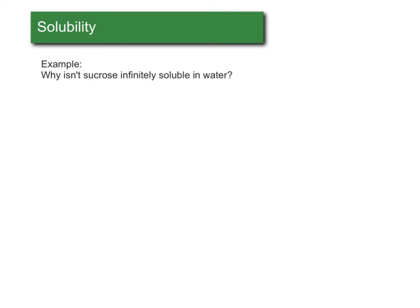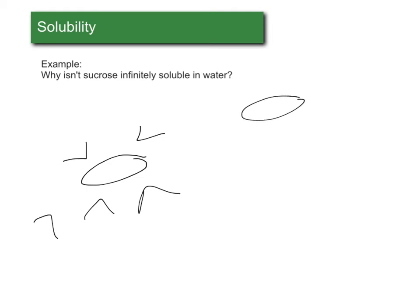So why isn't sucrose infinitely soluble in water? To understand this, we need to talk about how sucrose interacts with water. If this is our molecule of sucrose, when we put it in water, we have tiny water molecules that interact with it and separate it. Our sugar starts out all connected together, and then we put it in water and the water molecules surround it. But at some point, you're going to run out of water molecules to go around the sucrose molecules, so they can't all dissolve if there are too many relative to how much water. Sugar is very soluble in water and will easily dissolve in something like hot tea, but if you add enough of it, you'll end up with sugar sitting at the bottom of your cup.